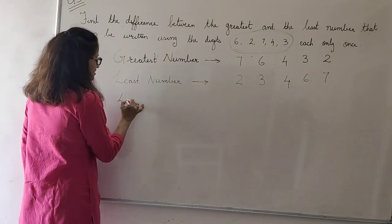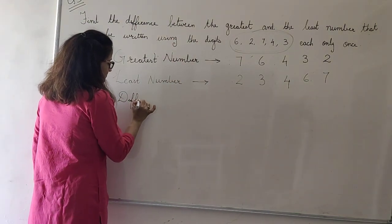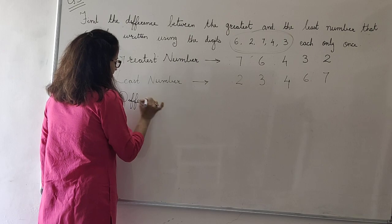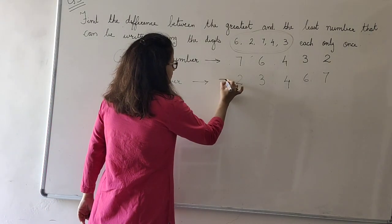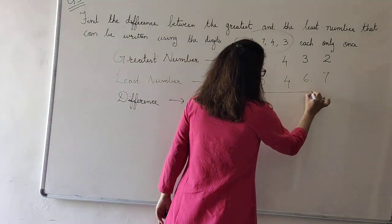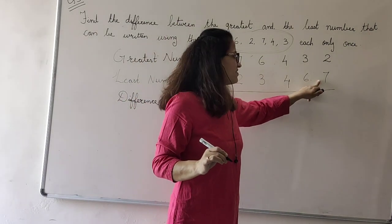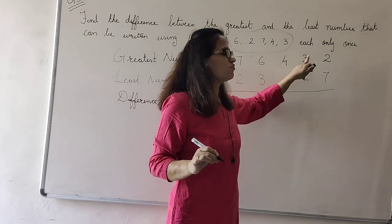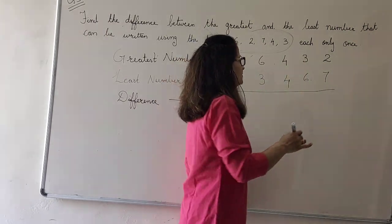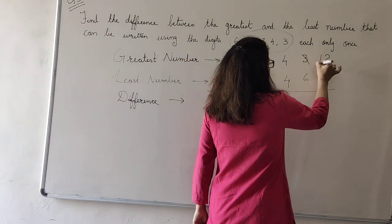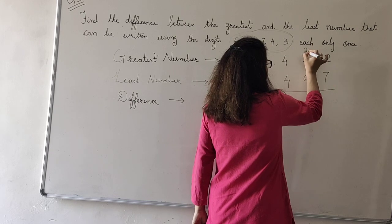Now I have to find the difference. That means minus. I will solve the sum here. Now, I cannot subtract 7 from 2. I need to borrow it from the neighbor. So, 1 and here it will become 2.